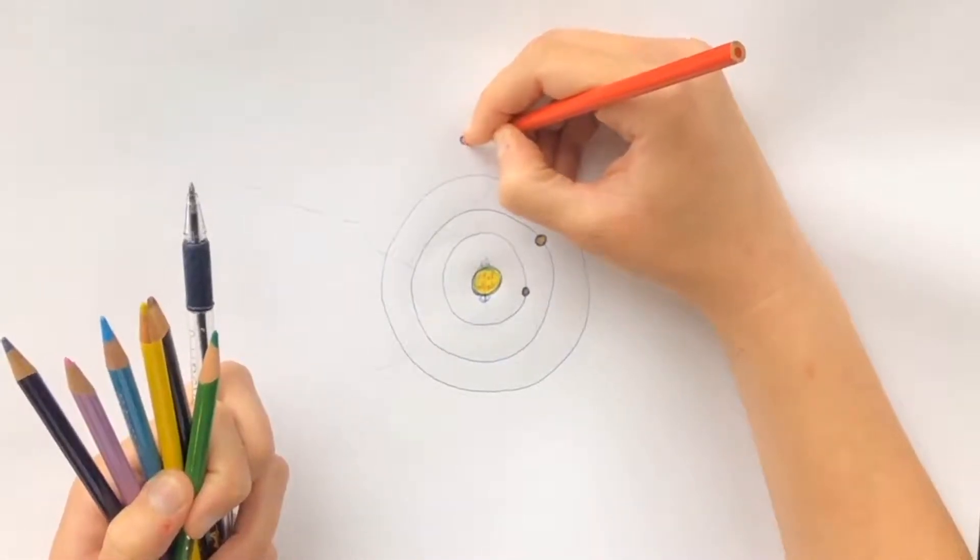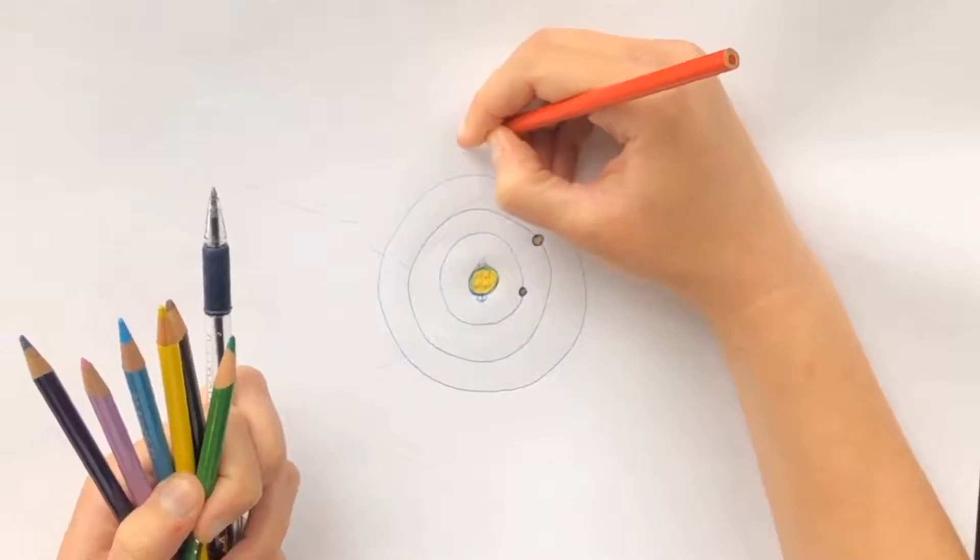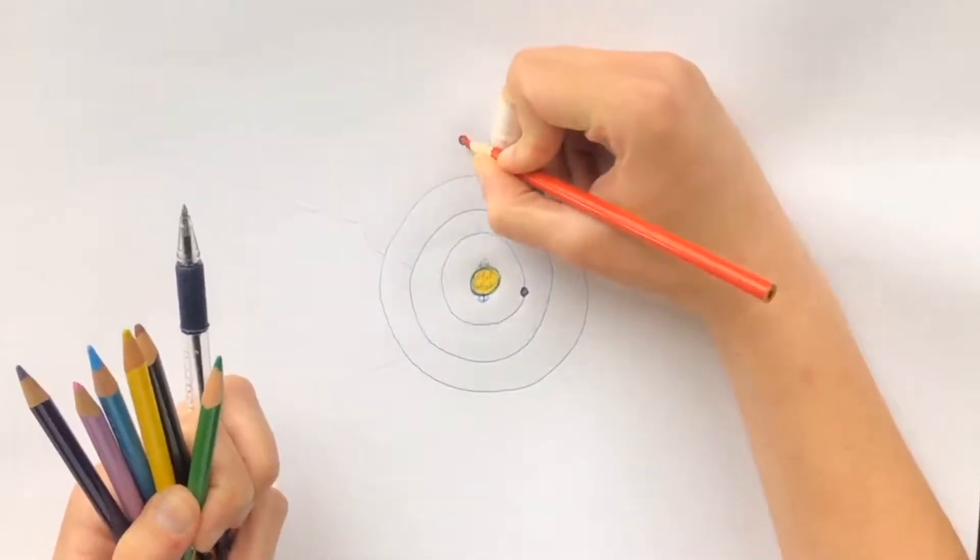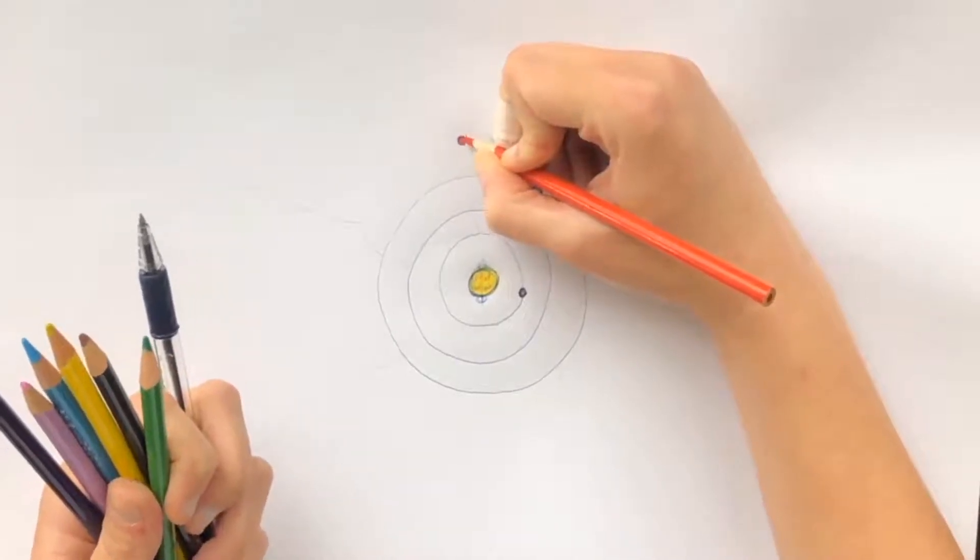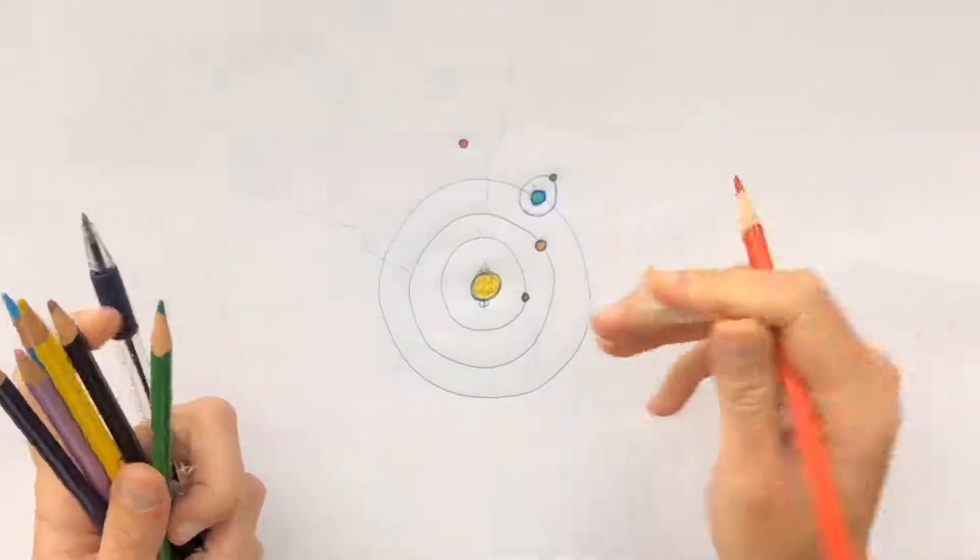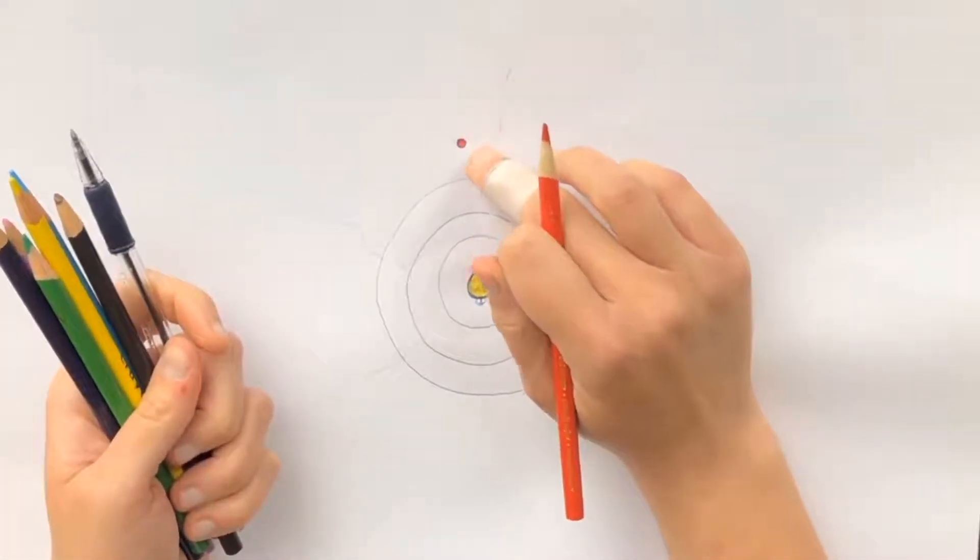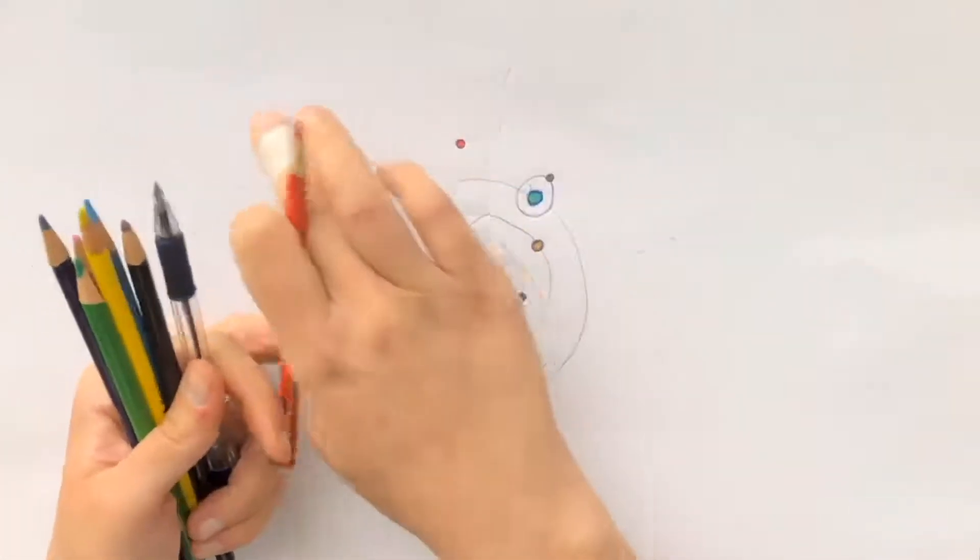If you have binoculars, you can probably even make out its color fairly clearly. But Mars is unique because it is actually this very striking color red, and that color red is where it actually got its name, Mars.